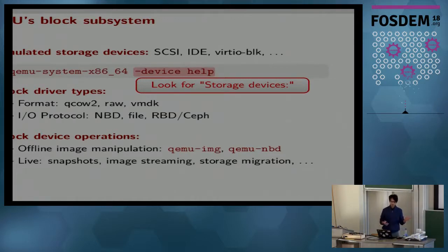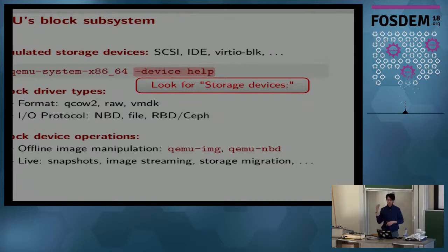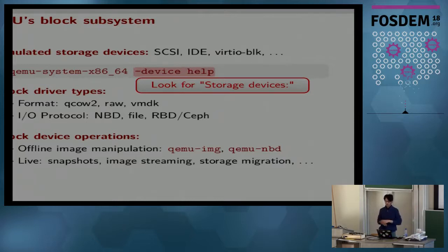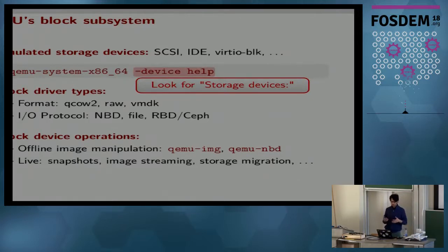QEMU also offers different live operations that you can do on block devices, as well as offline ones. The most popular offline tool is qemu-img, which you can use to create images, create backing chains, convert from one format to another, and a bunch of other things. The live operations are where most of the interesting stuff happens, although equally interesting stuff happens offline — but people care most about things that run live in production.